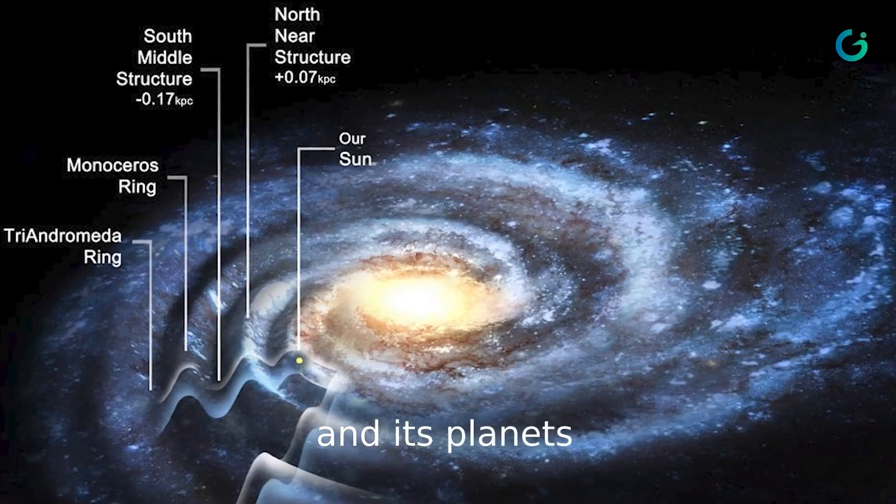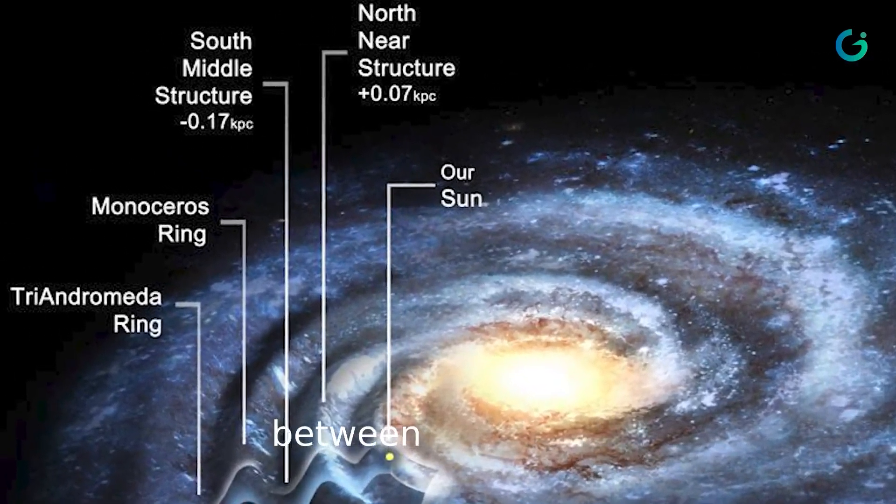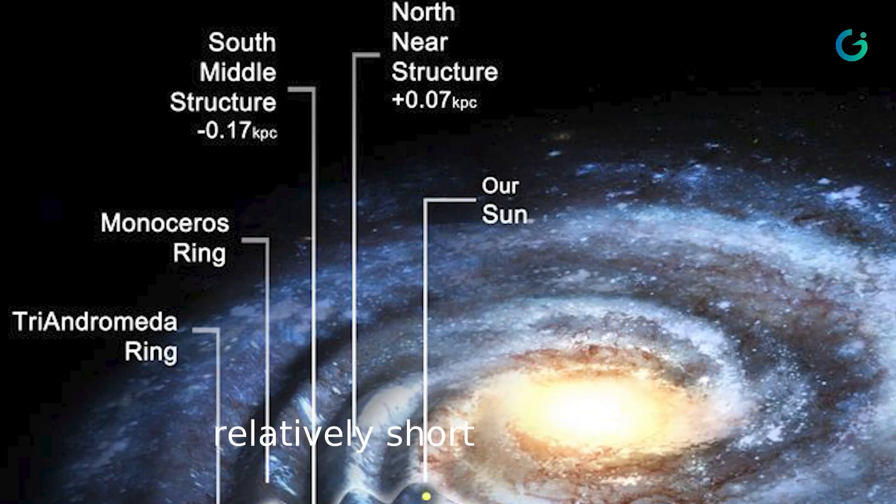While the Sun and its planets are part of the Milky Way, the vast distances between stars mean that they are, for the most part, unaffected by the dynamics of the spiral arms during their relatively short lifetimes.